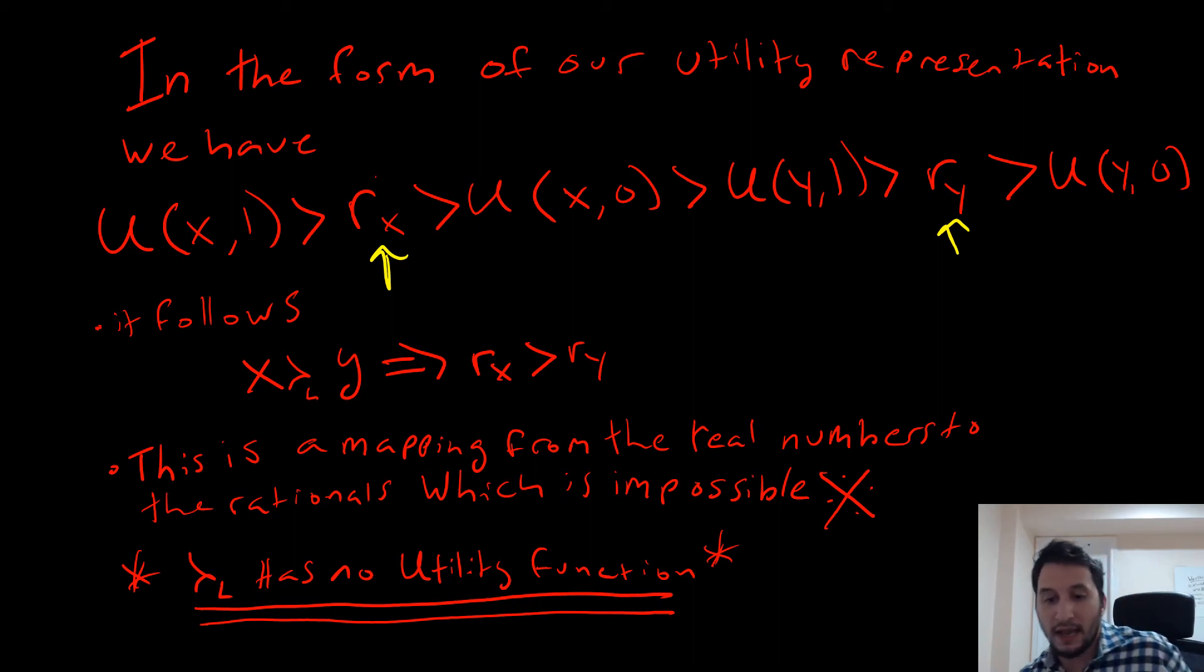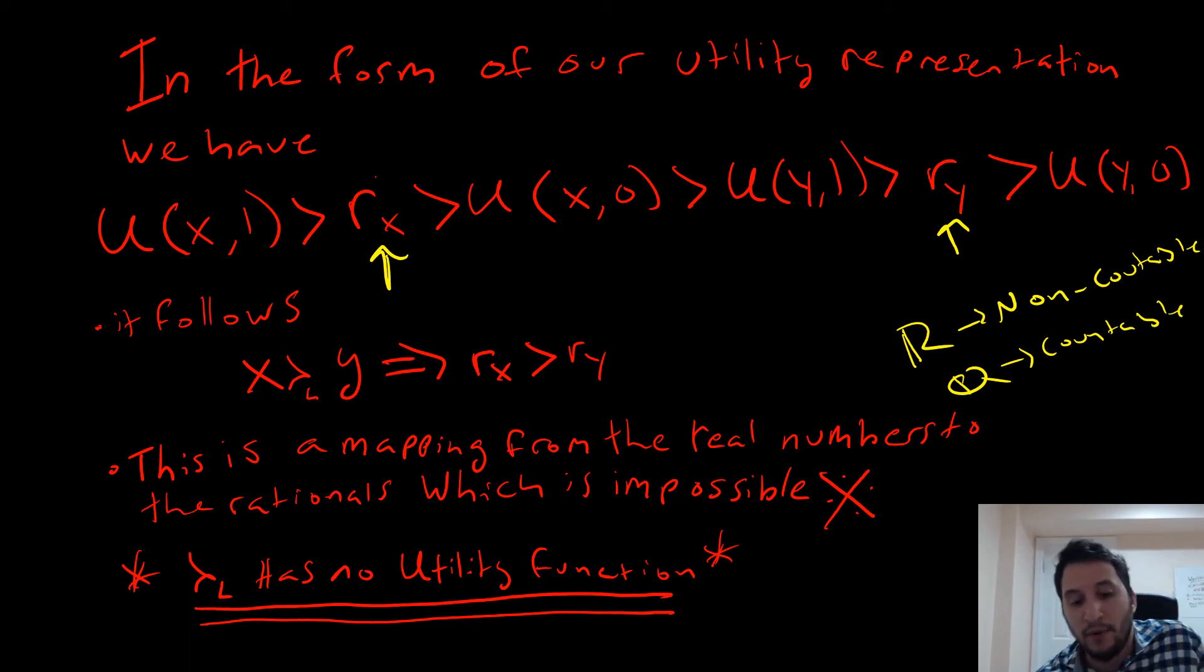However, this is a big problem, because it is a mapping from the reals to the rationals. And that's impossible, because this is non-countable and Q here is countable. Thus, we say that our lexicographic preference has no utility function here.